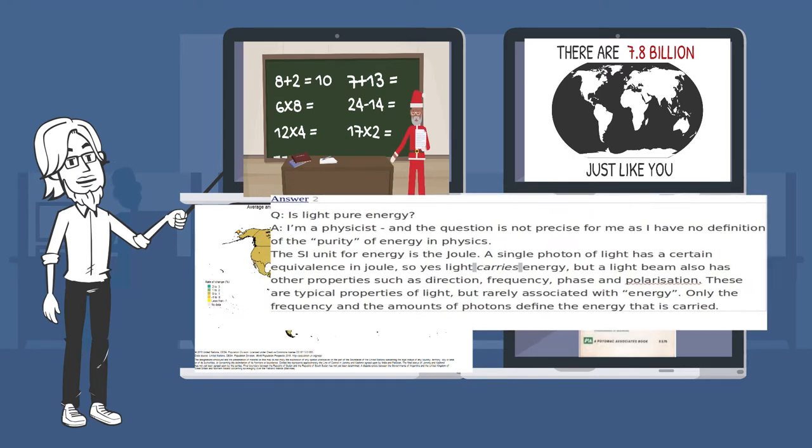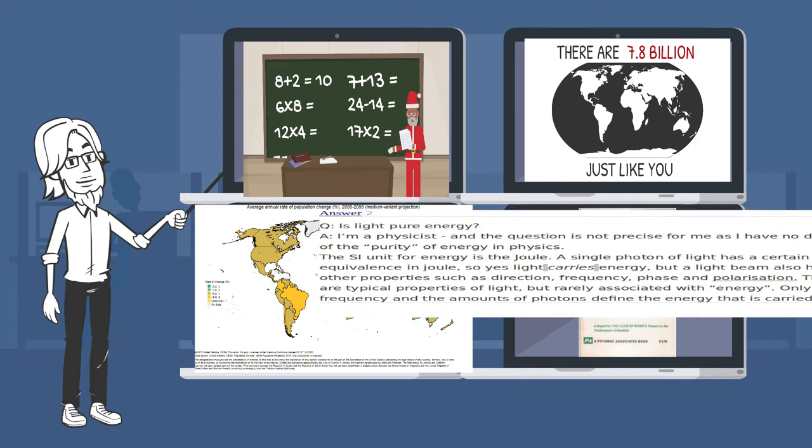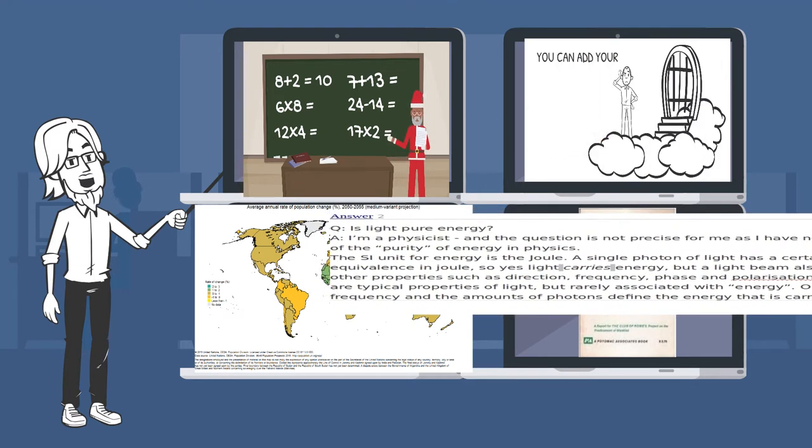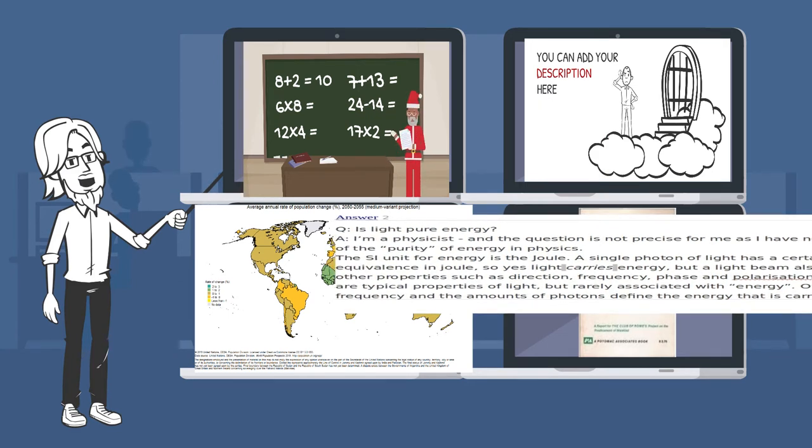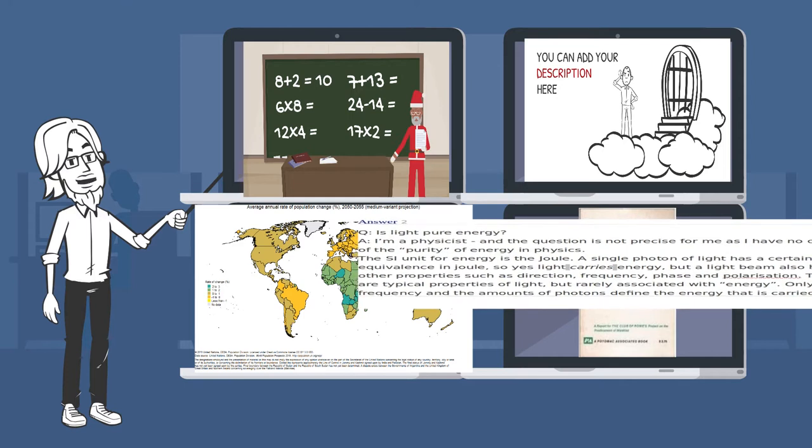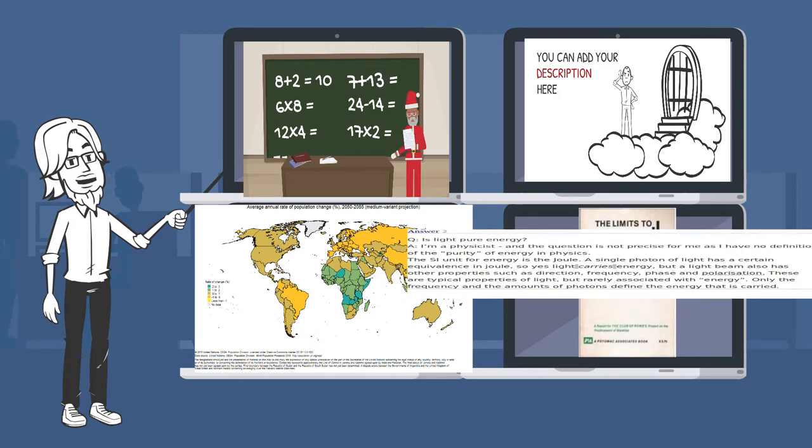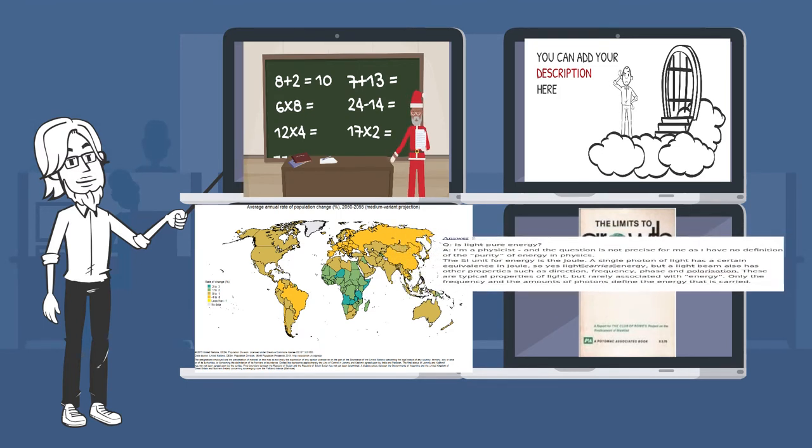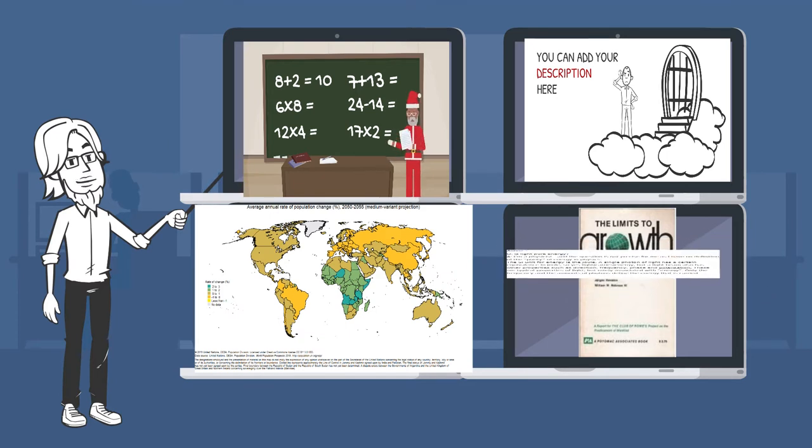Peter Goetkint, PhD Physical Sciences via University at Brussels, 1992. Answer 2: Is light pure energy? I'm a physicist, and the question is not precise for me as I have no definition of the purity of energy in physics. The SI unit for energy is the joule. A single photon of light has a certain equivalence in joule, so yes, light carries energy. But a light beam also has other properties such as direction, frequency, phase, and polarization. These are typical properties of light but rarely associated with energy. Only the frequency and the amounts of photons define the energy that is carried.